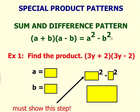So let's try this first question. We have 3y plus 2 times 3y minus 2. Hopefully you should be able to determine what the a value is. The a value is the first term for each of the binomials. In this case it is 3y. The b value in this question is 2.